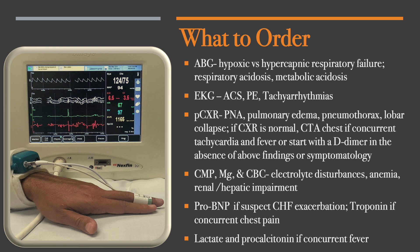If they're having tachycardia and fever, you really want to go ahead and get the CTA. For labs: CMP, MAG, and CBC — looking for electrolyte disturbances, anemia, and renal or hepatic impairment. Get a pro-BNP if you suspect CHF exacerbation, and troponin if there's concurrent chest pain. If there's no chest pain, no peripheral edema, and you're not auscultating rales, there's no need for pro-BNP or troponin. Get a lactate and procalcitonin if there's concurrent fever.